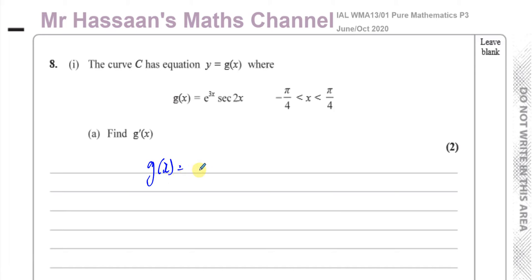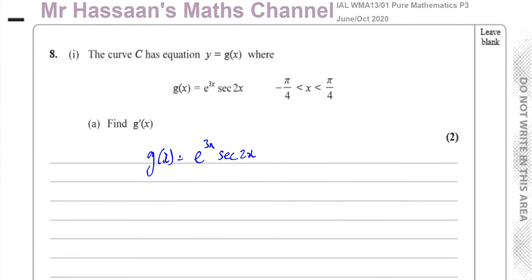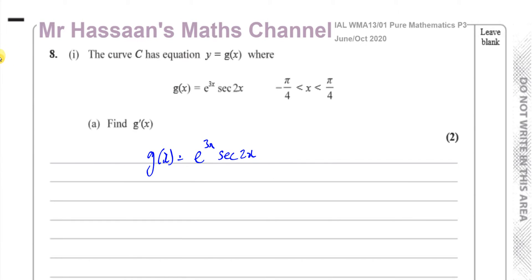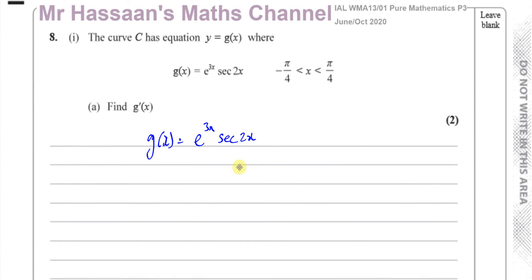g of x is equal to e to the power of 3x times secant of 2x, where x is between minus pi over 4 and pi over 4. To differentiate something like this, we have a product of two completely separate functions, so we have to use the product rule. One part we call u and the other we call v. I'm going to call u equal to e to the power of 3x, and v equal to secant 2x.